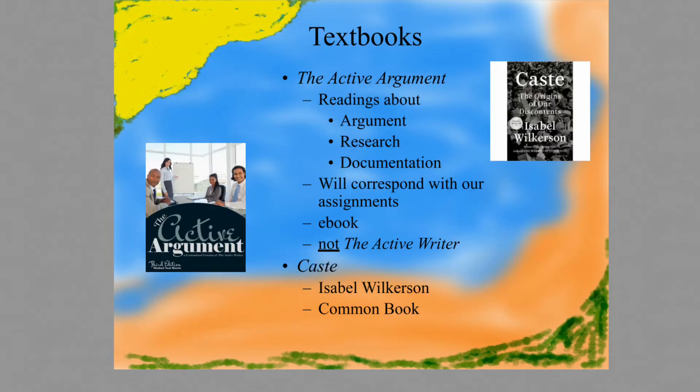There are two textbooks for the course. The first is called The Active Argument. It includes reading about the three main concepts of this course: argument, research, and documentation. They will correspond in some way with our assignments. It is also an eBook — it is not The Active Writer, which is a book for a different course. The other book for this class is called Caste: The Origins of Our Discontents by Isabel Wilkerson.